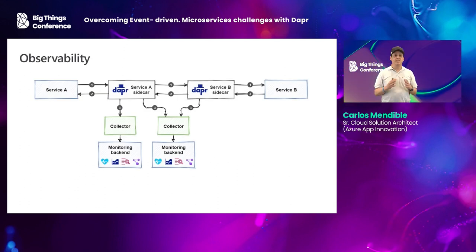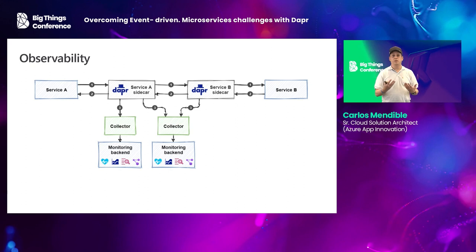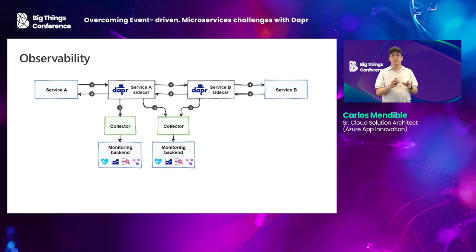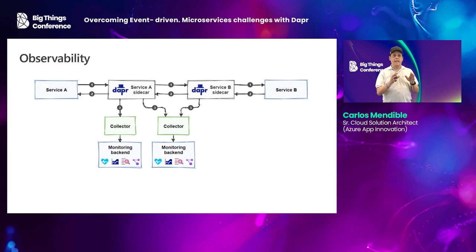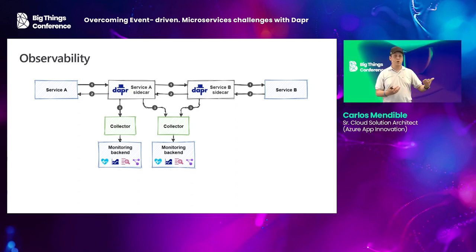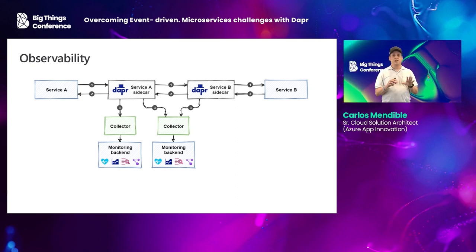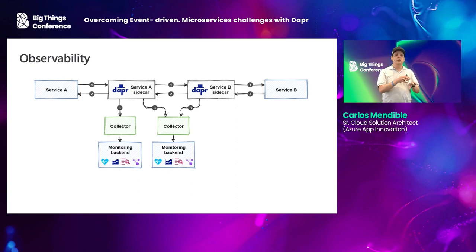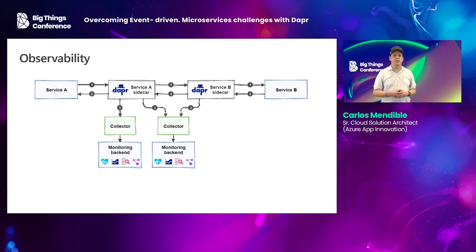None of this would make sense if you couldn't monitor or observe what's going on with all your solutions. Dapr exposes the metrics, logs, and telemetry necessary to track everything in your solution. It does so through OpenTelemetry — an open standard — so you can plug in any logging solution, and you'll see that in the demo in a couple of minutes.